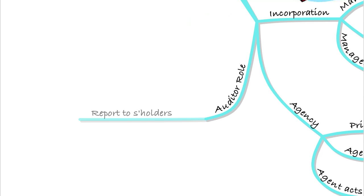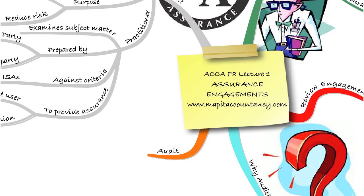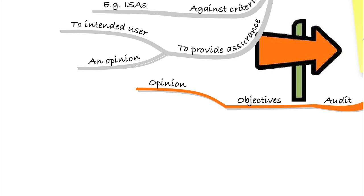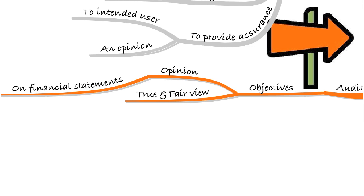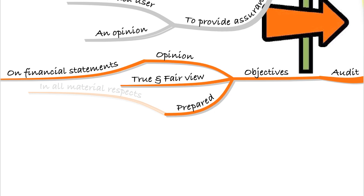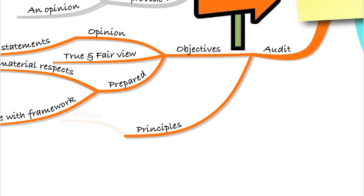The auditor reports to the shareholders on the financial statements, providing quality assurance to say yes, we've looked at these financial statements and they're okay. The objective of the audit is to provide an opinion on whether the financial statements give a true and fair view — meaning they're honest, they reflect the underlying accounting in the business — and that they've been prepared in all material respects in accordance with whatever framework they've been prepared with.